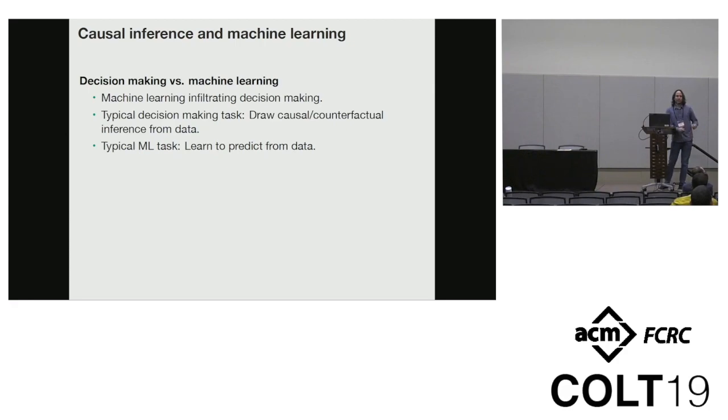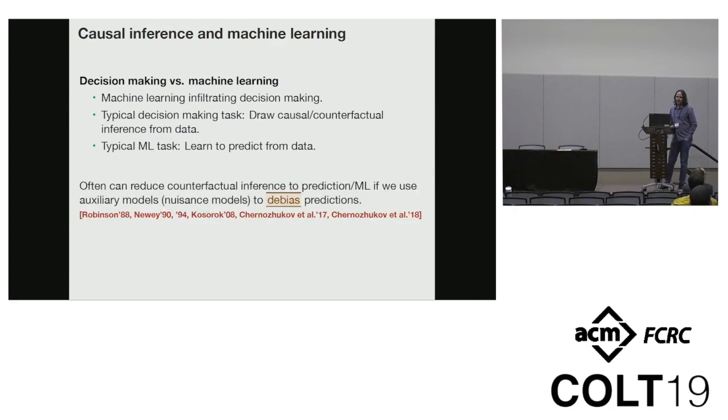In machine learning, we're usually interested in making predictions from data, like does an image contain a cat or a dog? In decision-making, we're more interested in counterfactual inferences. Maybe I have a dataset where one action was made - what would have changed if I had made a different action? There's a growing body of work that shows machine learning can be useful for these counterfactual inference tasks. It's just that we need to do additional work on top to debias the predictions that come out of machine learning.